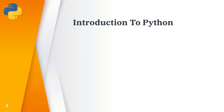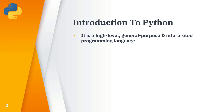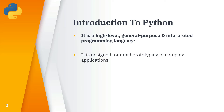What is Python? Python is a high-level, general-purpose, and interpreted programming language. It is designed for rapid prototyping of complex applications. That's the definition of Python.